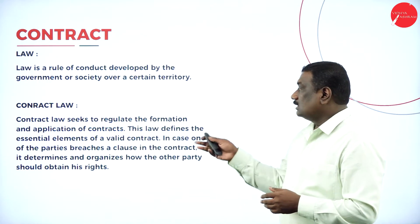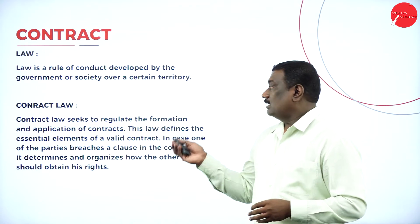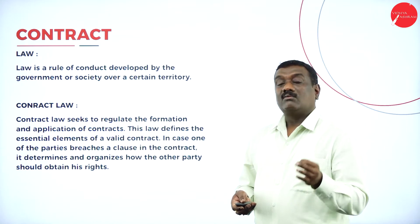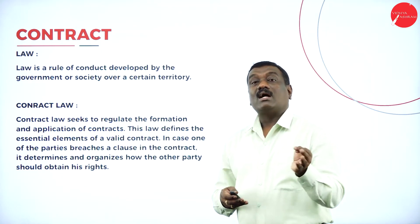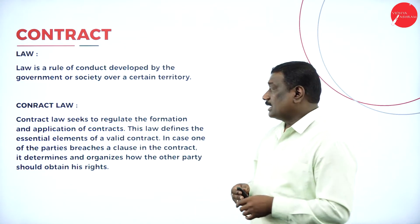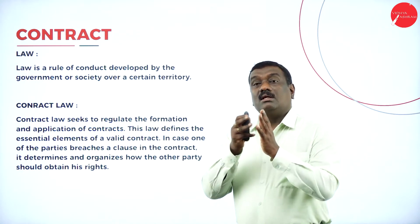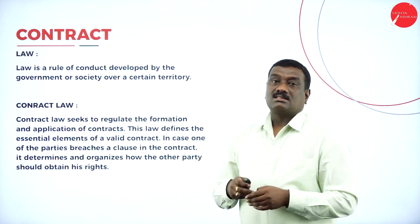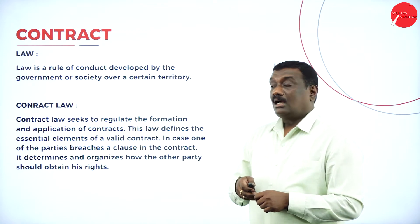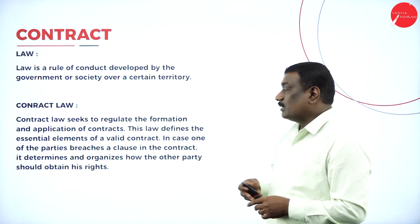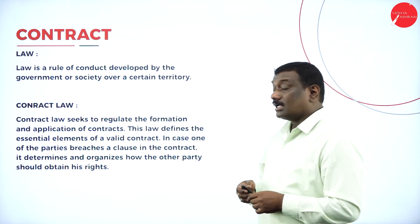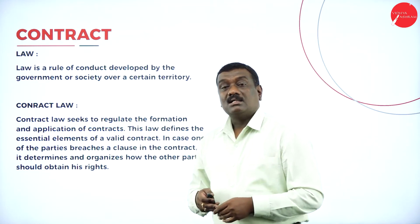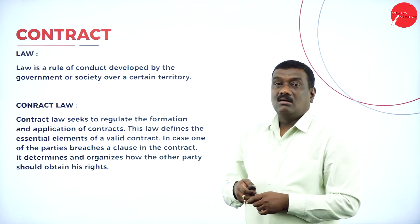This law defines the essential elements of a valid contract — that particular agreement should be a lawful or valid agreement to become a contract. In a contract there are two parties: the promisor and the promisee. If the promisor breaches a clause in the contract, this contract law will help the other party to obtain their rights.